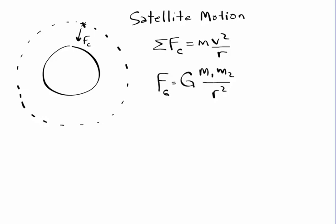What I'm going to do is I'm going to substitute the right-hand side of this equation into the left-hand side of the top equation, and I get that big G, M1, M2 over R squared equals MV squared over R.